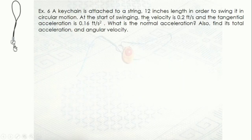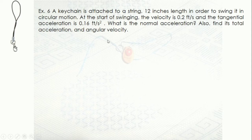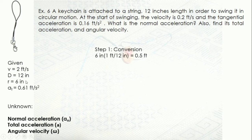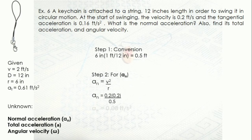A keychain is attached to a string of 12 inches in length in order to swing it in circular motion. At the start of swinging, the velocity is 0.2 feet per second and tangential acceleration is 0.16 feet per second squared. We need to find normal acceleration, total acceleration, and angular velocity. Step 1: convert 12 inches into 0.5 feet. Step 2 for normal acceleration: use the formula V squared over R; plugging in the values gives 0.08 feet per second squared.